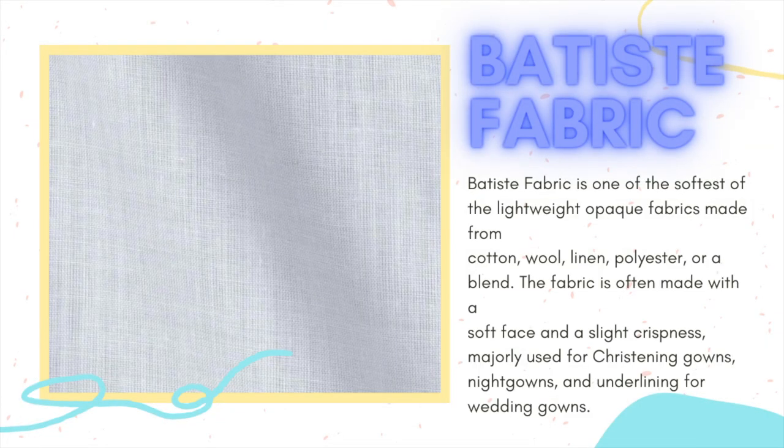Batiste fabric. Batiste fabric is one of the softest and lightest opaque fabrics, made from cotton, wool, linen, polyester, or a blend. The fabric is often made with a soft face and a slight crispiness. It is majorly used for christening gowns, nightgowns, and underlining for wedding gowns.